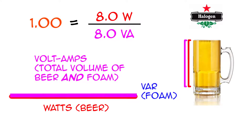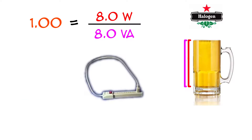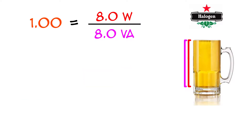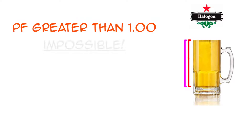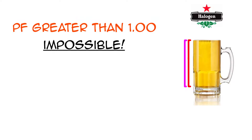Note that this also means incandescent and halogen lamps have a power factor of 1. Power factor can never be greater than 1 — that would mean greater than 100% efficiency, in which case you'd be able to cram a keg of beer into a bottle, and you should go apply for a patent right now.